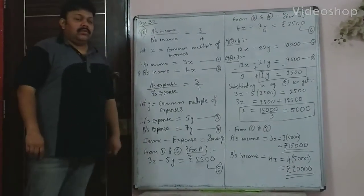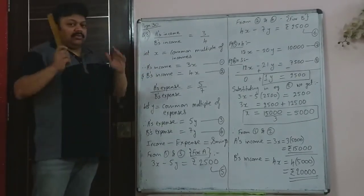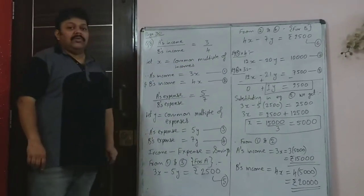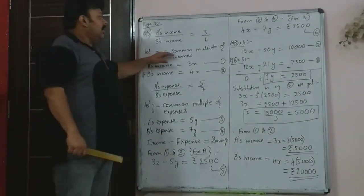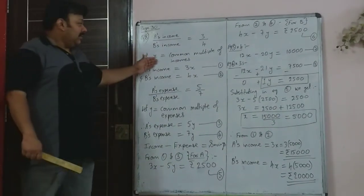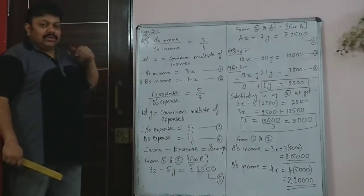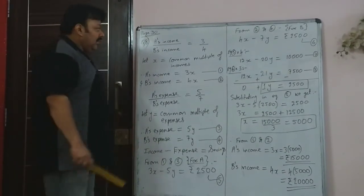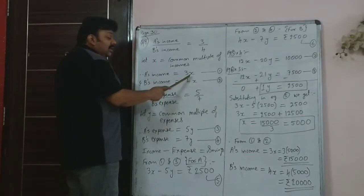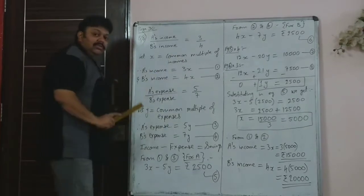Students, we continue with the word problems of simultaneous equations, going on to the 8th sum. These are all based on pure simple logic. Here you are given that the ratio of A's and B's income is 3 upon 4. Please understand why you write a common multiple. We cannot say A got 3 rupees and B got 4 rupees — it would be a multiple of that. So whenever you have a ratio, A's income is 3x and B's income is 4x, with a common multiple that cancels to give the ratio 3 by 4.